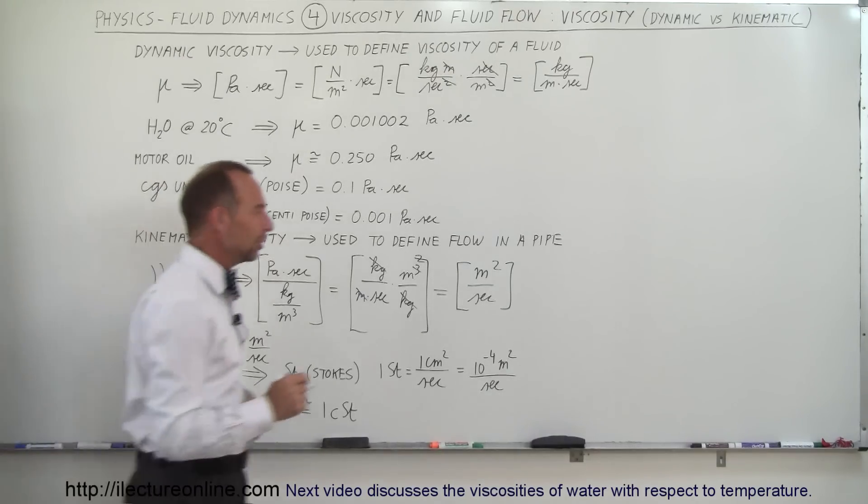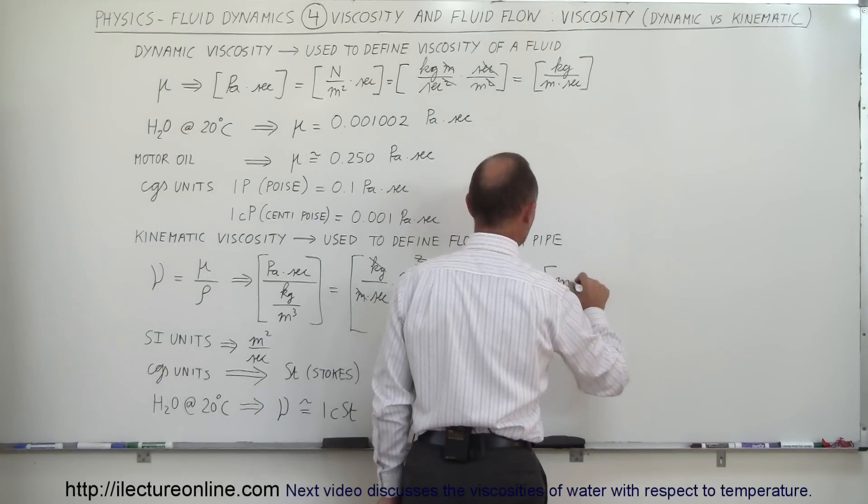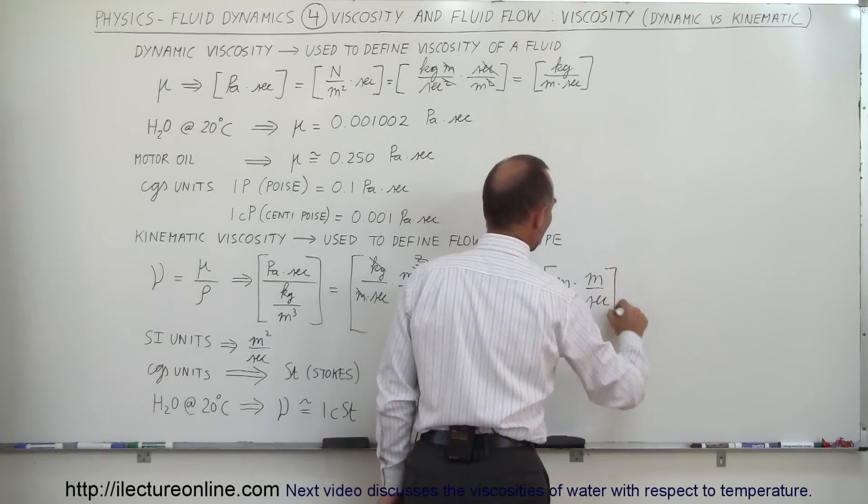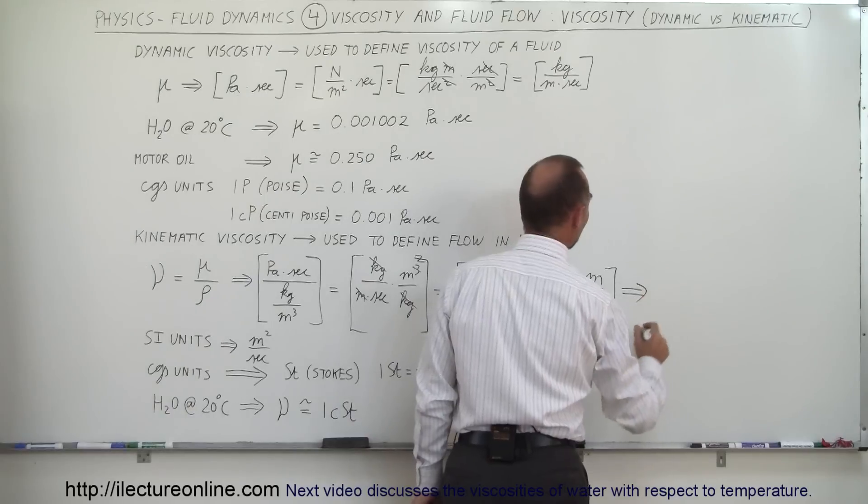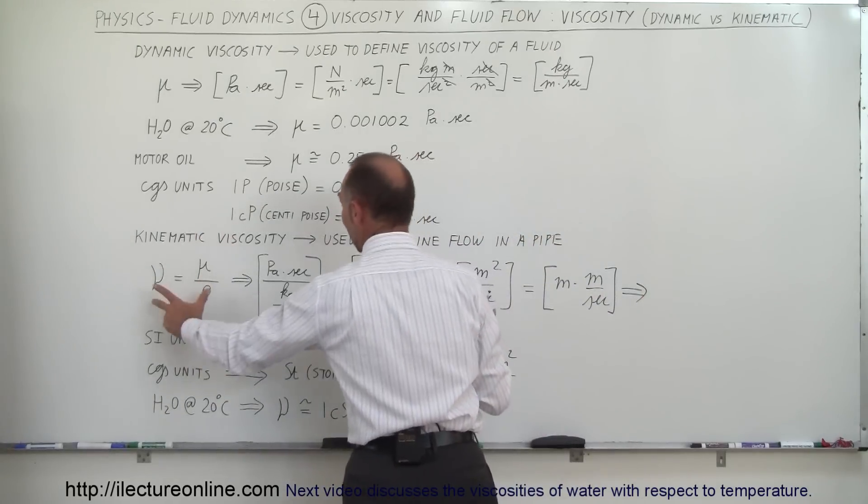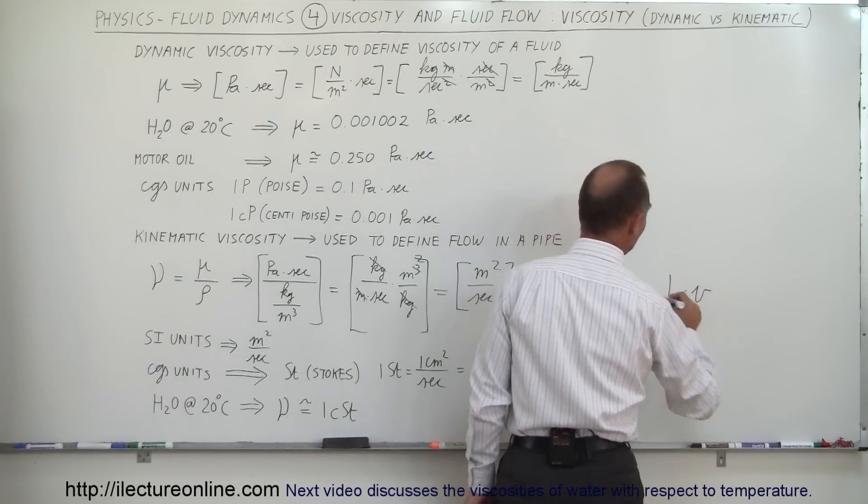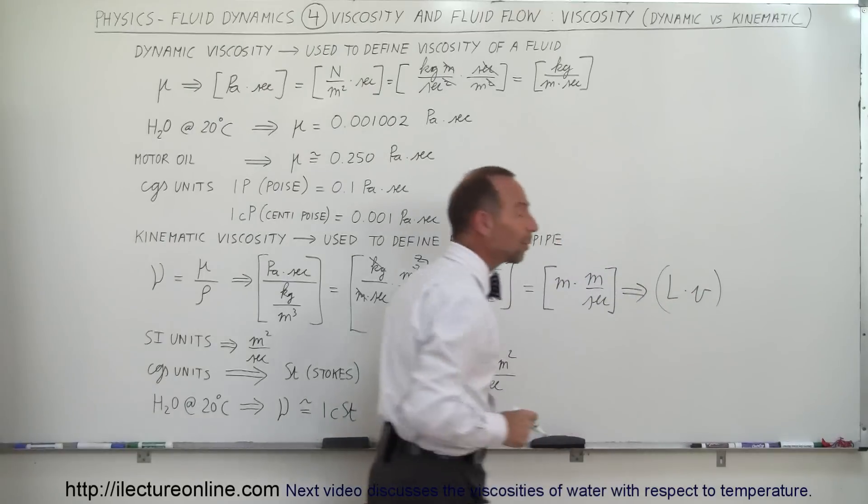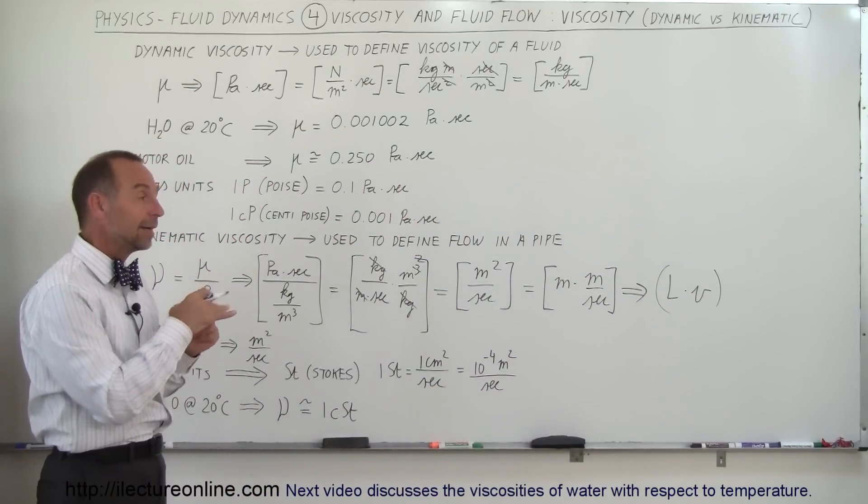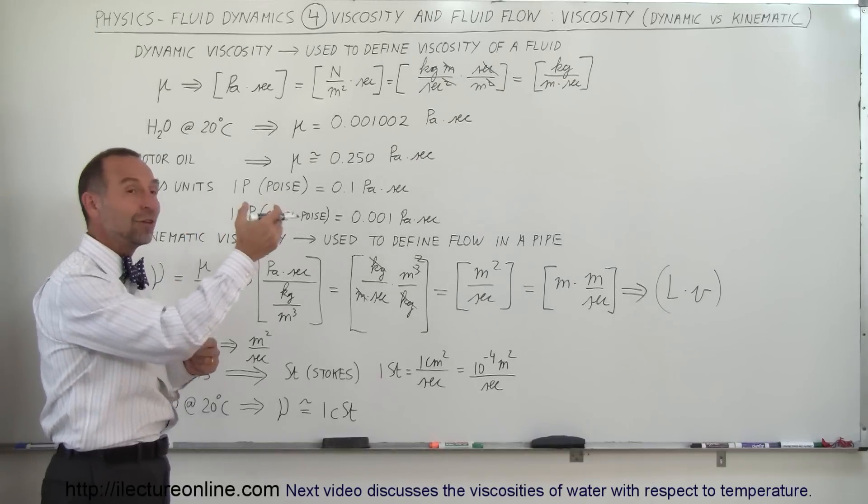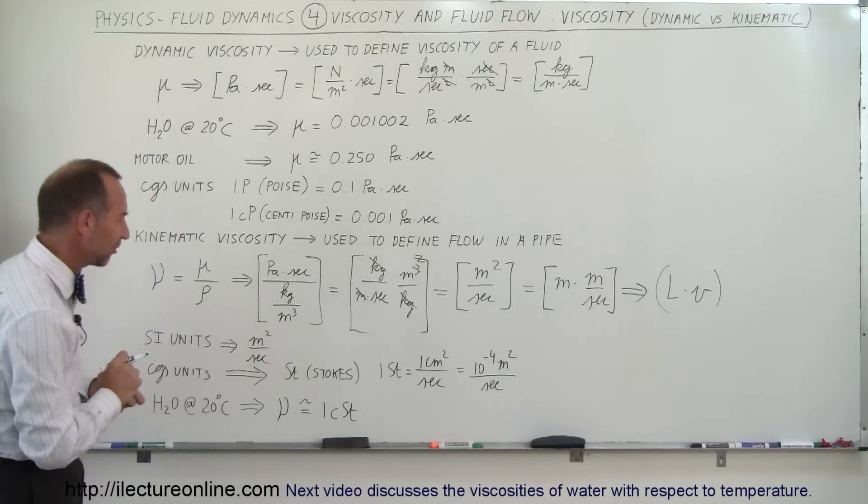Now, it turns out if we rewrite those units, something interesting will happen. So if we write this as meter times meters per second, notice that this is the units of length and this is the units of velocity, so that would then imply that the units of kinematic viscosity is the same as the product of the length times the velocity. So it's kind of interesting when you think about that. And also remember in the previous video, we ended up multiplying the viscosity constant by L times V divided by L times V to get units of force. So, again, there's some interesting relationship there.